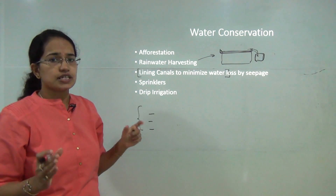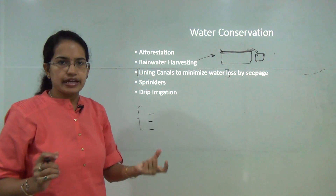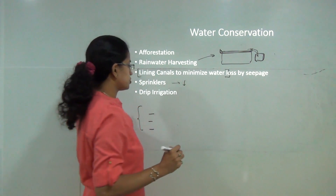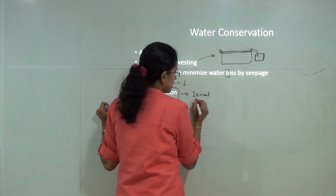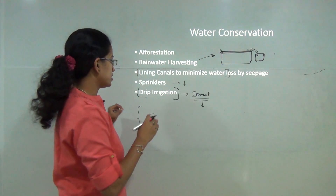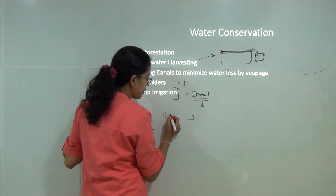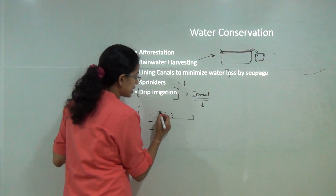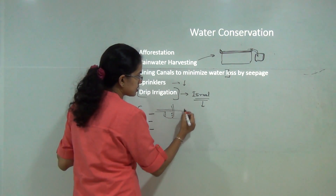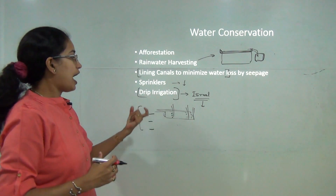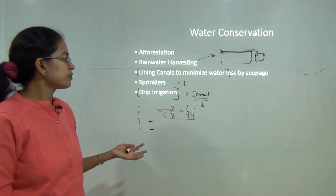Canals should be lined properly to minimize water loss by seepage. Sprinkler technology decreases the amount of water used. Drip irrigation has successfully converted arid areas of Israel into productive agricultural regions - instead of providing water all at once, water is continuously delivered drop by drop through pipelines to crops. Drip irrigation is especially successful in desert areas.